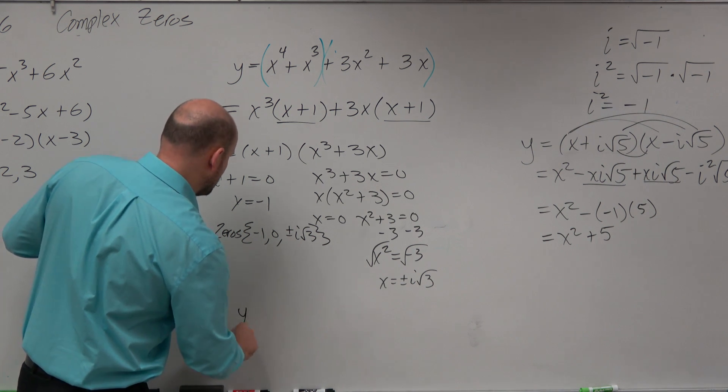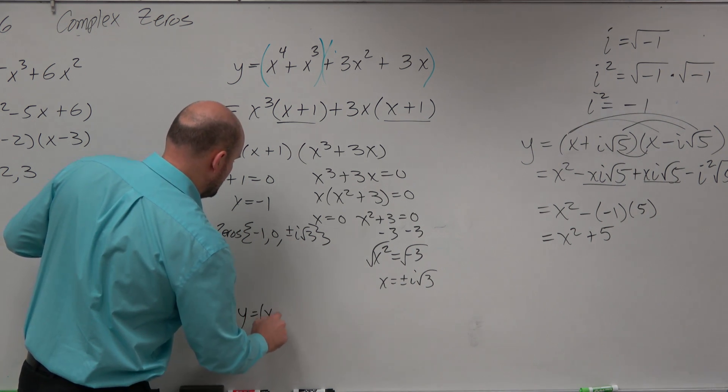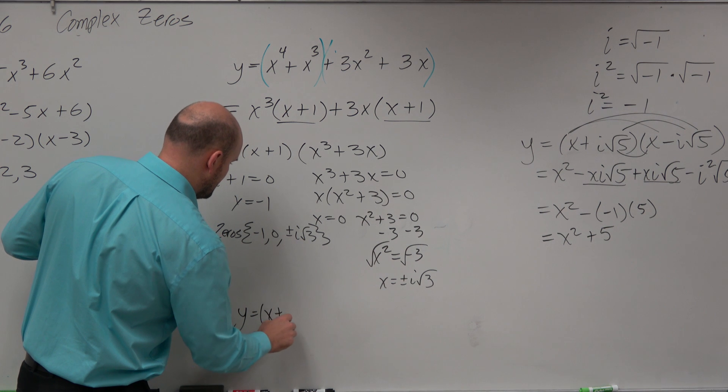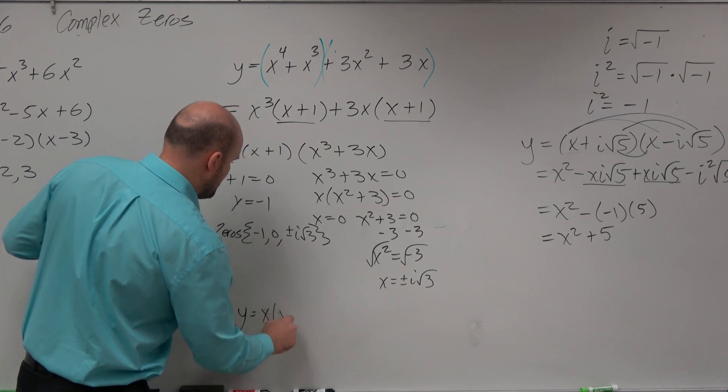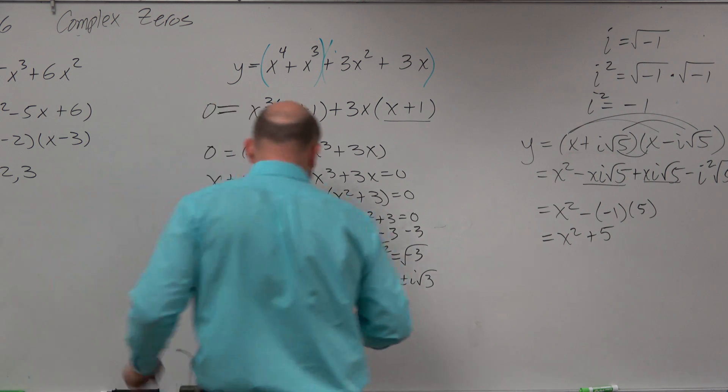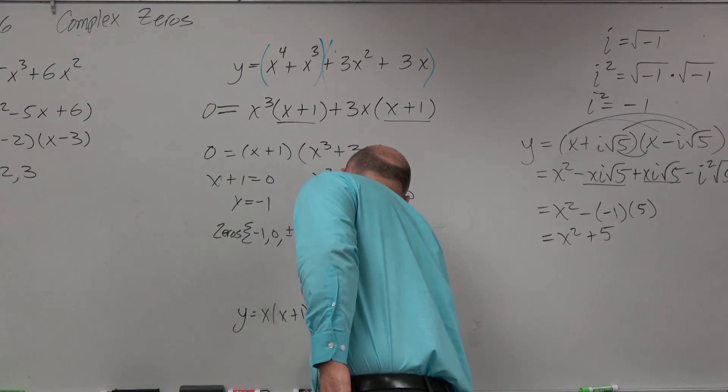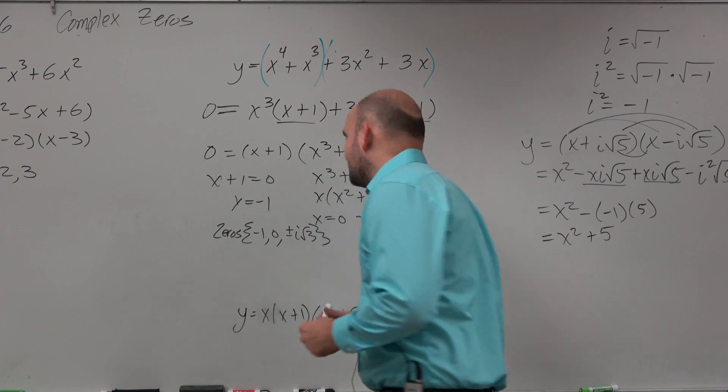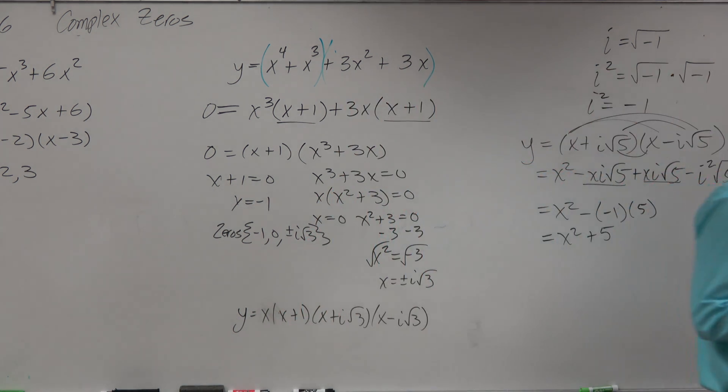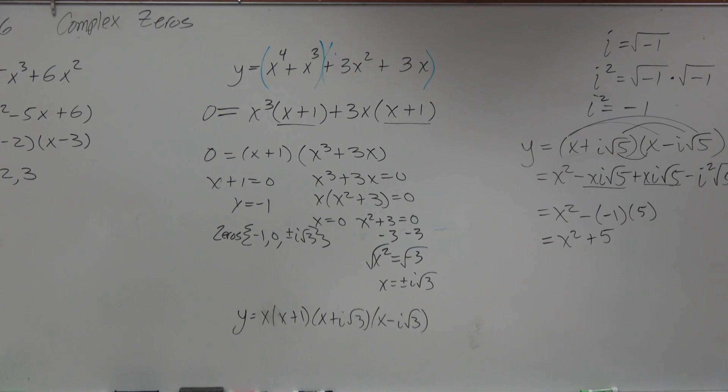And if I wanted to write this as a linear factorization, which I said to do, you'd write x first, that's the easiest one to do. And then I could write x plus i square root of 3 and x minus i square root of 3. And therefore, you're just writing your zeros when you're writing the linear factorization. The easiest thing, I think, to do is find the zeros and then just go back.